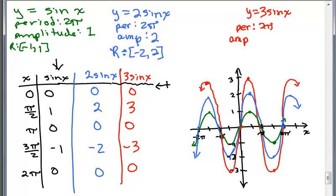The amplitude, all right, what's the amplitude of this one? It's 3. And what's the range? It goes between negative 3 and 3. And remember for all of them, sine x, all of these, the domain is all real numbers.